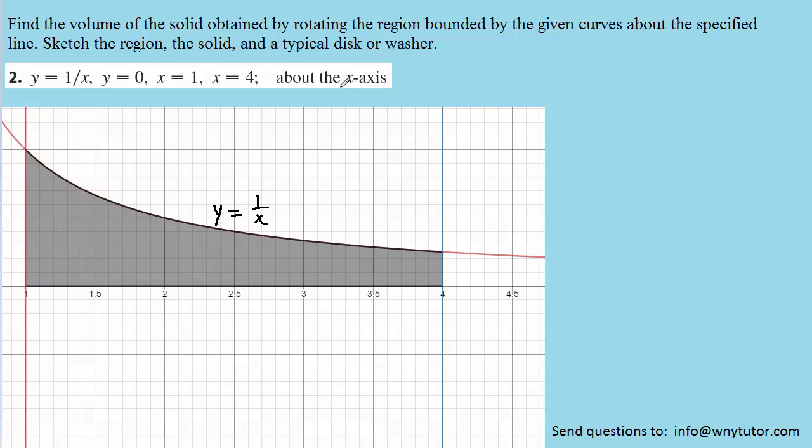Now we're going to take that region and rotate it about the x-axis. So we have to imagine that we're spinning this region around the x-axis. And as we do that, it's going to form a solid whose volume we're going to calculate. So here is what that solid would look like. It kind of looks like a megaphone or a speaker. And again, we're trying to find the volume of that.